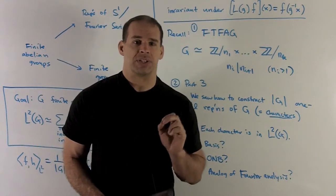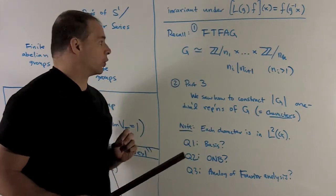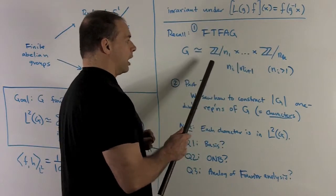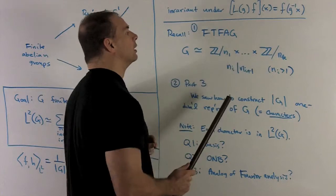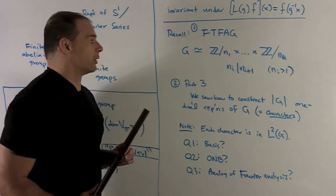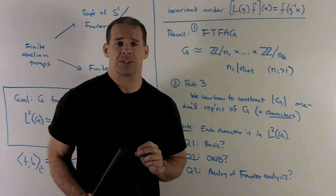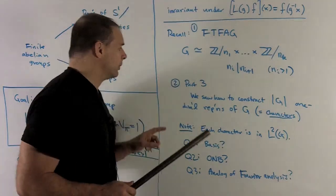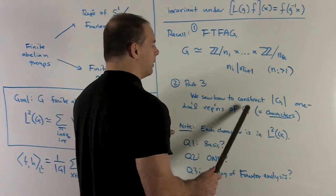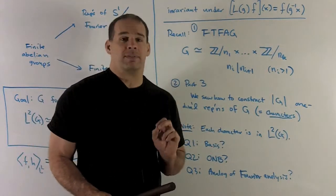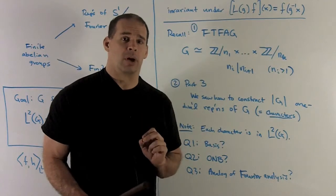Let's recall a few things, and then we'll see some questions pop out. First, the fundamental theorem of finite abelian groups: if G is a finite abelian group, we're going to be able to rewrite it as a direct product of some Z mod n's, where each n_i divides the next n_{i+1}, and all n_i are greater than one. Going back to part three, we looked at all the one-dimensional representations for a finite abelian group and how we construct those — we saw how to construct order-G of these one-dimensional representations. As a definition, we call these the characters. We'll have another definition for characters later on using the trace of a representation, so you have to check your context.